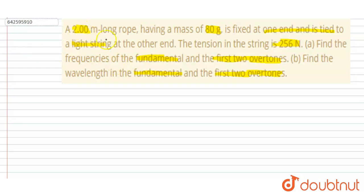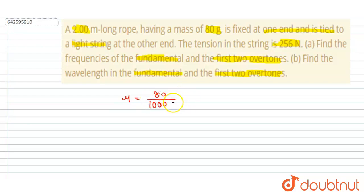The length of the string is 2 meters and mass is 80 grams. If I calculate the mass per unit length μ, that would be 80 grams divided by 1000 kilograms, divided by 2. So this will be the mass per unit length — it is 4 by 100, so μ = 4/100 kilogram per meter.